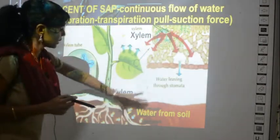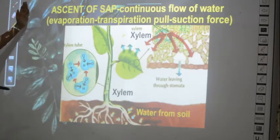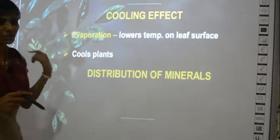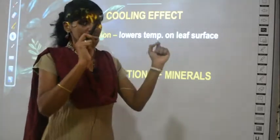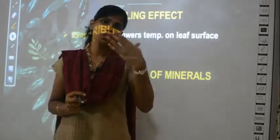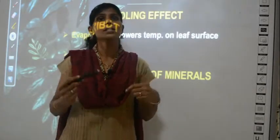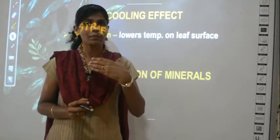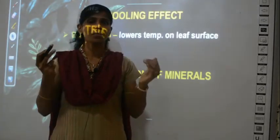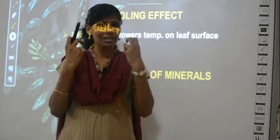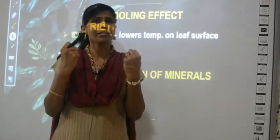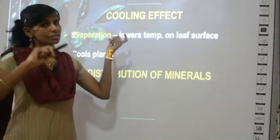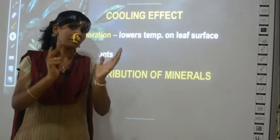The other uses are cooling effect and distribution of minerals. The cooling effect is similar to sweating in humans. When it is hot, humans sweat — there is loss of water — and the body cools down. Similarly, in plants, once water is evaporated through transpiration, the plant experiences a cooling effect.